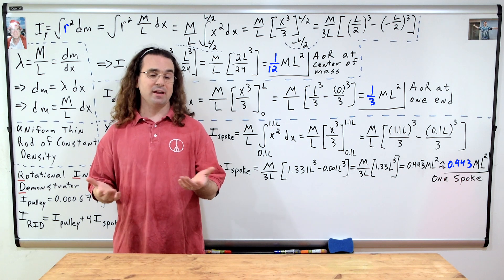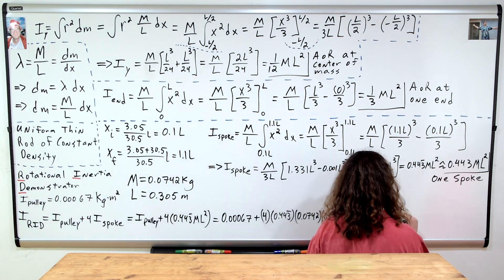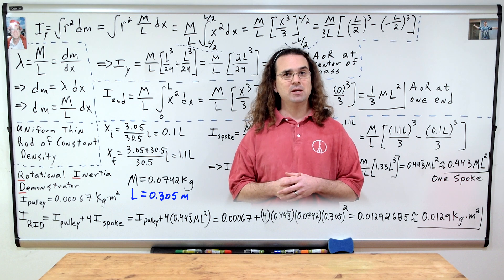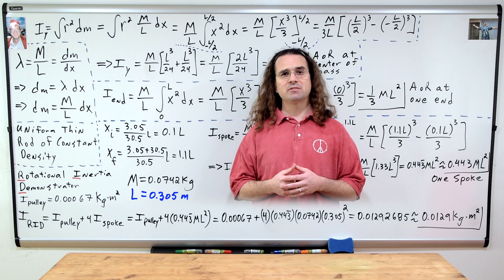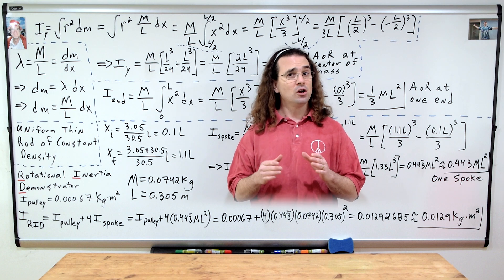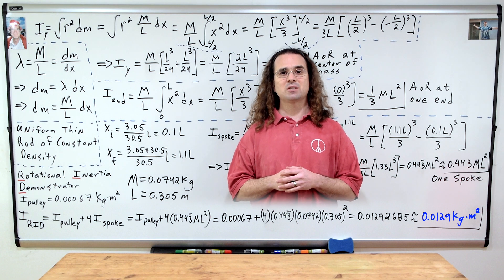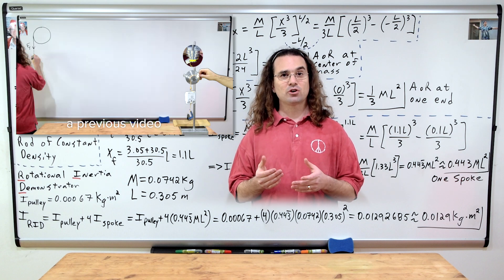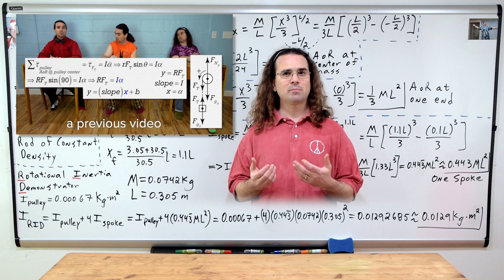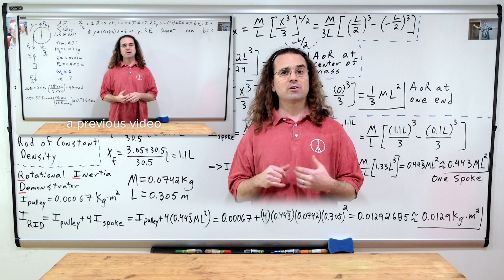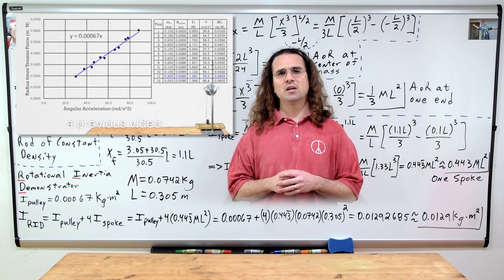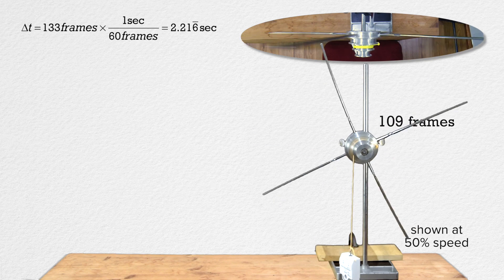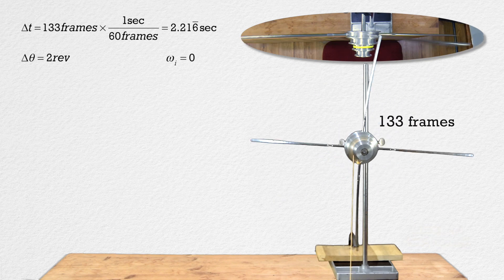Alright, let's plug in numbers and check our answer. The mass of one spoke is 0.0742 kilograms and the length of one spoke is 0.305 meters. Plugging those numbers into our equation gives us a total rotational inertia for the demonstrator with four spokes of 0.0129 kg·m² with three significant digits. Previously, we solved for the rotational inertia of an object in terms of pulley radius, angular acceleration, and the force of tension acting on the pulley — you are welcome to check out that video. I'm simply going to use the equations from that solution with new numbers we collect right now.